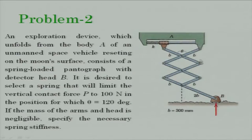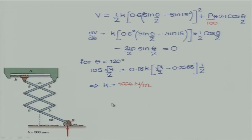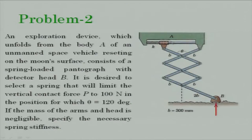Given that the mass of the arms and head is negligible, what is the corresponding stiffness? Note that when theta equals 30 degrees, the spring is unstretched. With this information, we want to find the spring constant such that the contact force does not exceed 100 Newtons. The moment you write down the potential energy and take dV/dθ equal to 0, you will find the answer immediately.